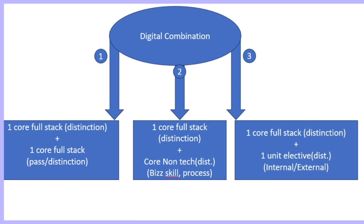The first combination is to choose two full stacks. For example, if you choose T1 and T2, in T1 you have to achieve distinction and in T2 either pass or distinction — and vice versa. So with two full stacks where one has distinction and the other has pass or distinction, you will become Digital.